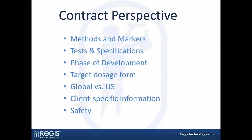Our contract perspective is that we need to know these things. Methods and markers — we have to have them. Tests and specifications — you need to know your targets. You also need to know the phase of development, and if possible, they can inform you of what the target dosage type will be. Think about where this is being registered. Do we have to follow any USP methods, EP methods, or in some cases BP methods? Of course, client-specific information — things unique to the customer — and safety. Cannot forget safety.